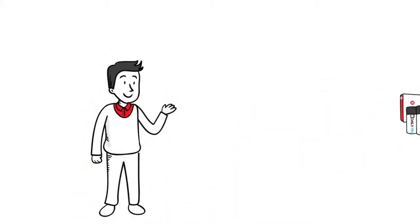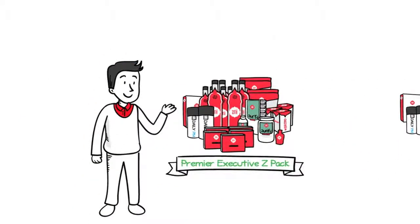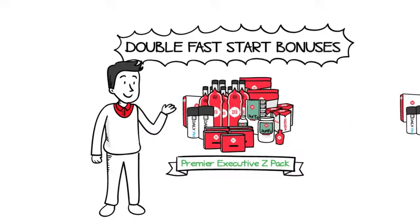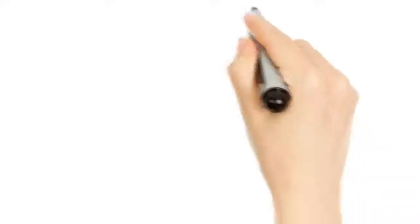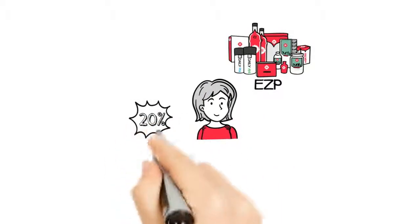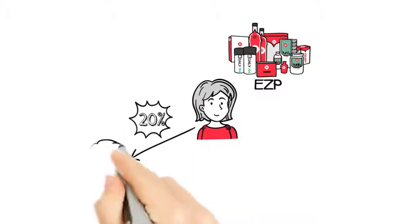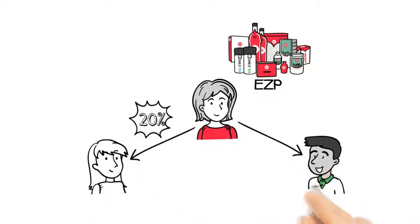When you get started with a PEZP, you start making double fast start bonuses on every single person you personally enroll. Now, remember that our friend Nora was earning a 20% fast start bonus on any and all orders she personally sponsored. That was pretty cool, right?